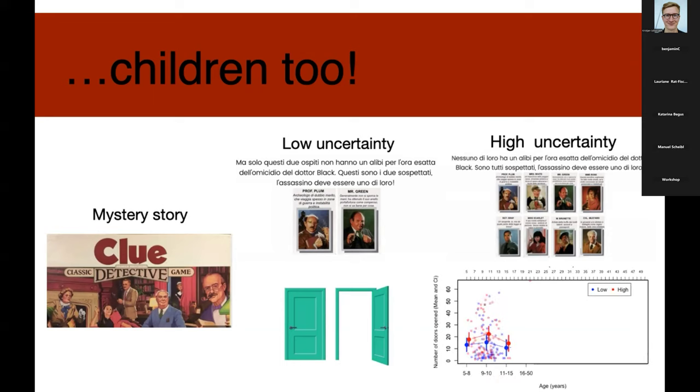And we found again that children's search, at least up to age 15, was motivated by the expected informativeness of the action available. So here you can see that it's a different sort of plot, but they are more persistent and they're more likely to open doors in the high uncertainty condition compared to the low uncertainty condition. But interestingly, we found that we found that effect completely disappeared after age 16.